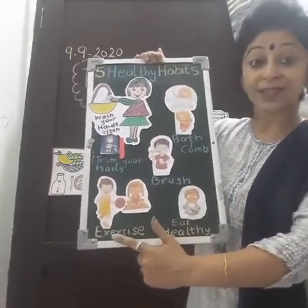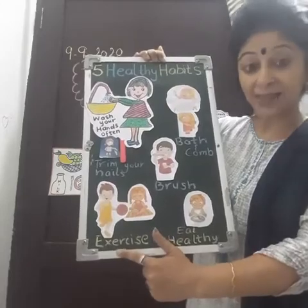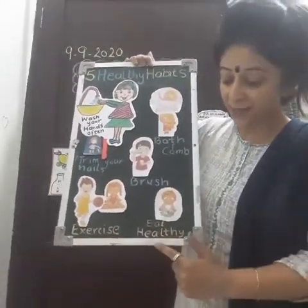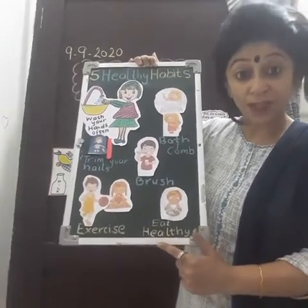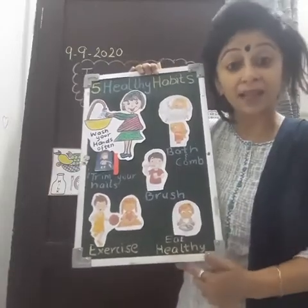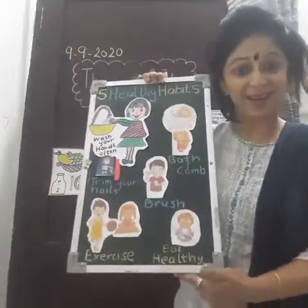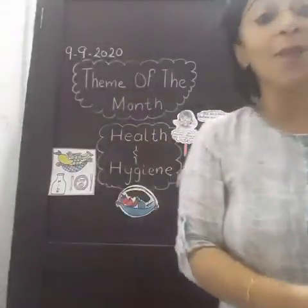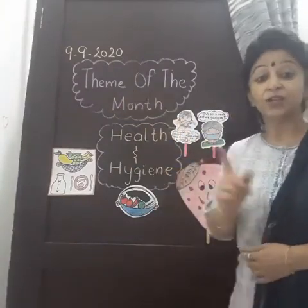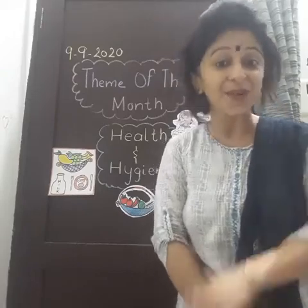Habit four says: exercise, exercise, exercise once a day. Habit five says: eat healthy food, healthy food every day. Okay children, healthy food humain roz khana hai. So this is all about our theme of the month — health and hygiene. You have to learn all these things. Bye-bye children — stay home, stay safe, and stay healthy too. Bye-bye!